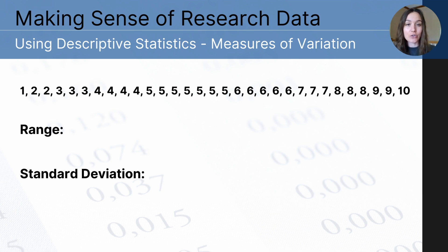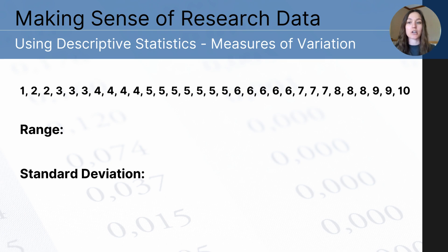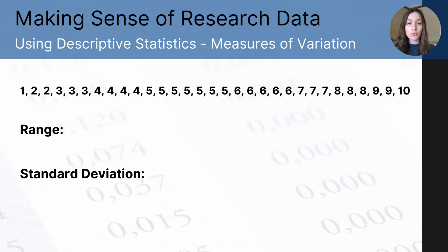Now we will focus on measures of variation. There are two measurement tools on this particular data set: range and standard deviation. Both are considered measures of variation, which help us understand how spread apart or dispersed our data set is. Range is the distance between the highest and lowest score in a data set — you're likely familiar with that already. Standard deviation you may be less familiar with, but you'll need to understand it, not necessarily calculate it. Go ahead and pause to determine the range: the difference between 10 and 1 is 9.